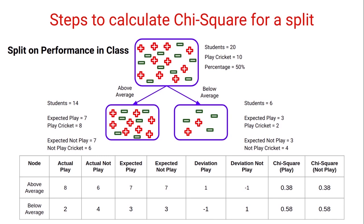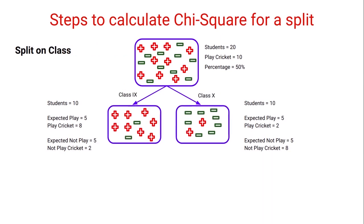When we plug in the values, the chi-square comes out to be 0.38 for the above-average node and 0.58 for the below-average node. Finally, the chi-square for the split on performance in class is the sum of all these values, which comes out to be 1.92.